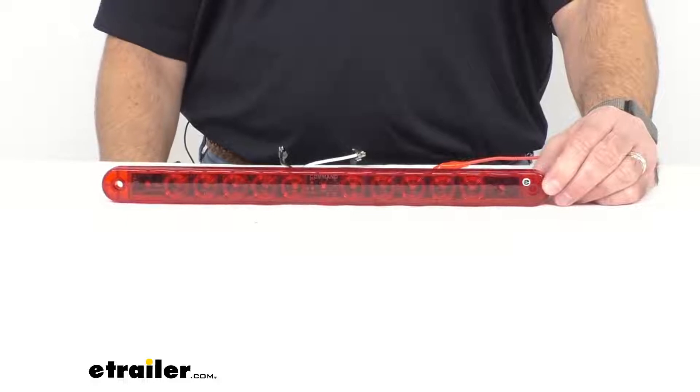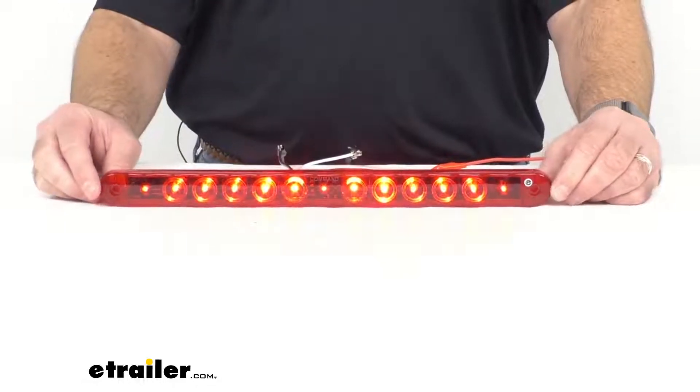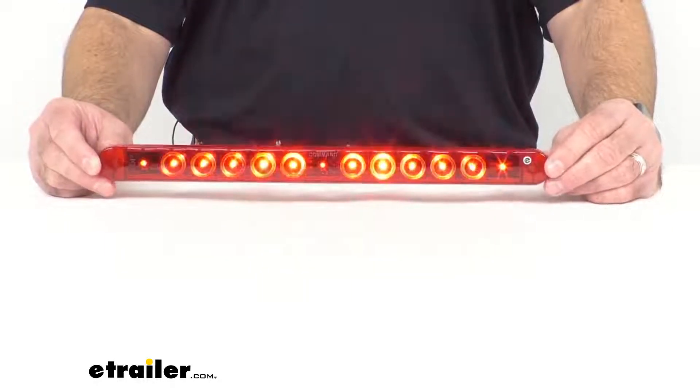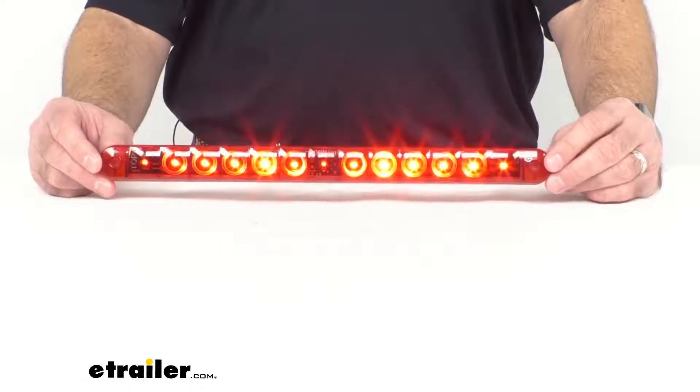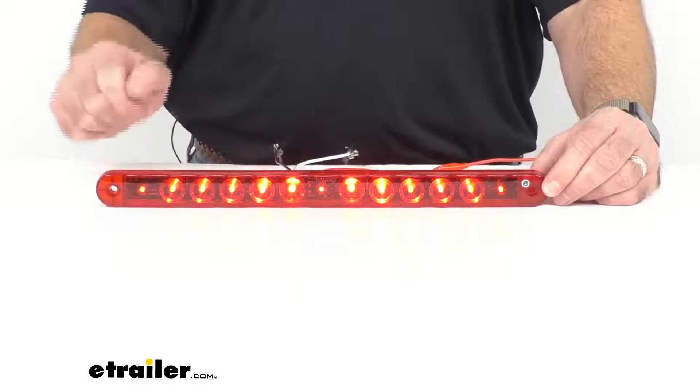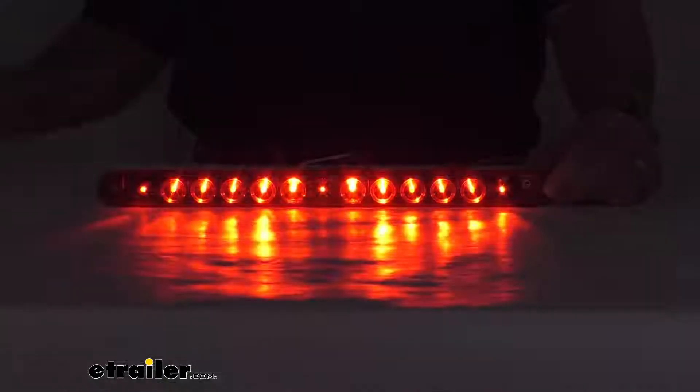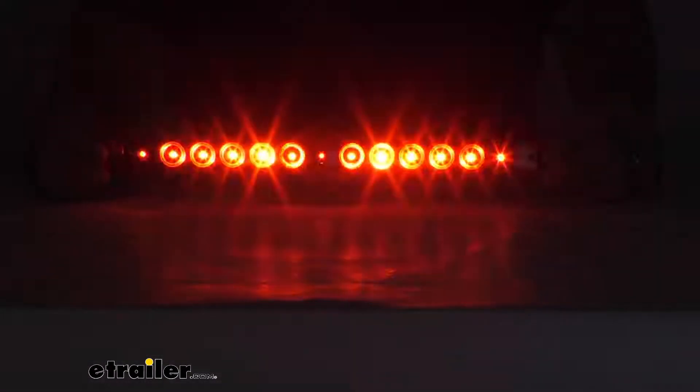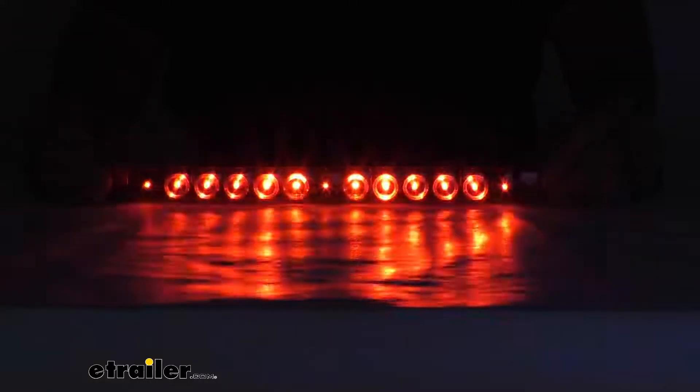Now I have this connected to 12 volt power, so I'm going to turn that on for you. And just so you can see how bright this light is, even with my studio lights on you can see the brilliance of these LEDs. Now I'm going to turn my lights off, and that's what your tail light function is going to look like.